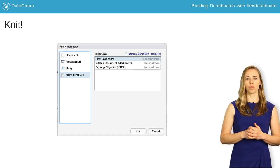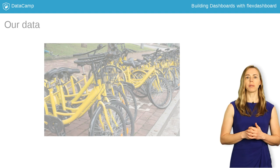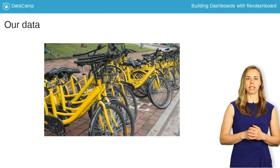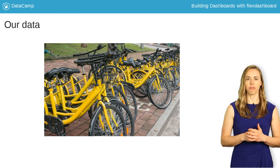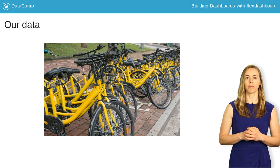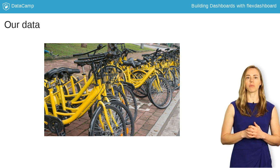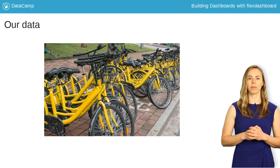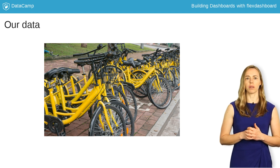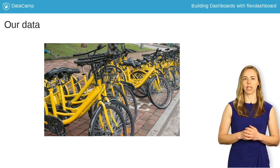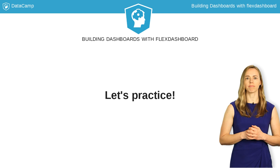For this course, we'll be using a publicly available dataset from a bike share service in the San Francisco area. It has records for all bike trips taken from station to station with locations and times. You'll see this data appear in many of the exercises. Time to put this into practice.